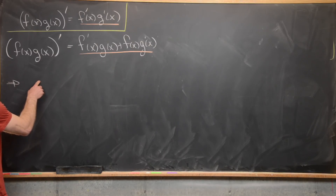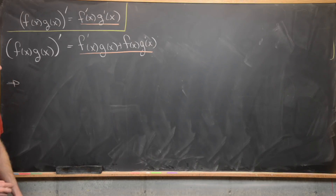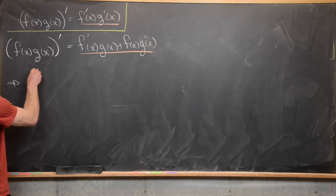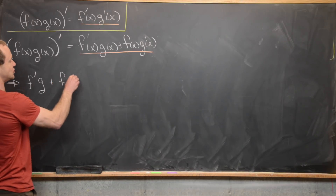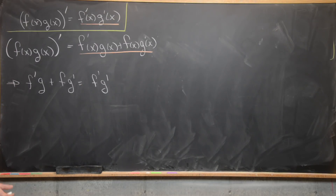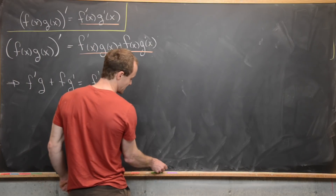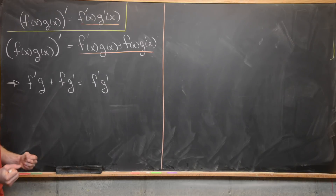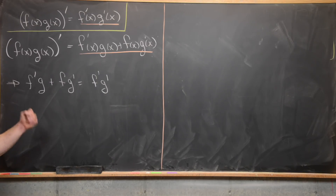From here I'll suppress the dependence on x, but recall that all of these depend on x. So we really have f'g + fg' = f'g'. We're trying to find functions f and g that satisfy this equation. Since we have a single differential equation, we can't leverage it to solve for two unknown functions simultaneously.